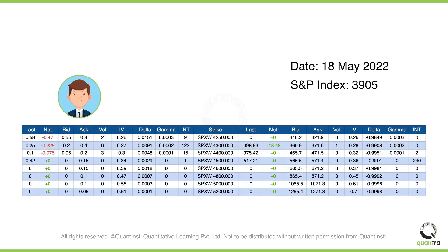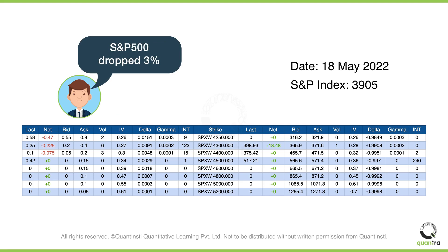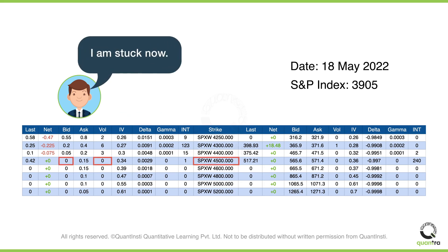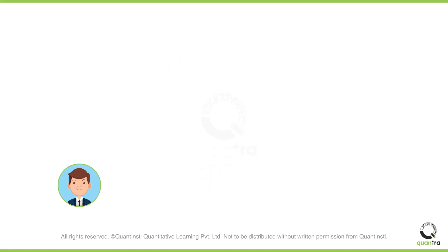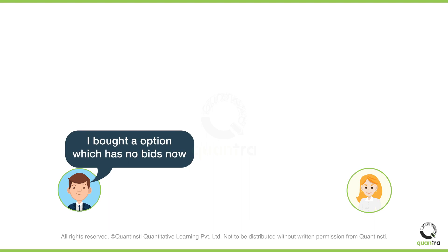After a few days, due to fear of recession in the US and high inflation, the S&P 500 fell by 3%. The option which John had purchased has no bids or buyers, and there is no volume either. John is stuck and faces the risk of options expiring worthless and losing out on the premium he paid. He goes to Sophie, a school friend and an expert in options trading, and explains what happened.